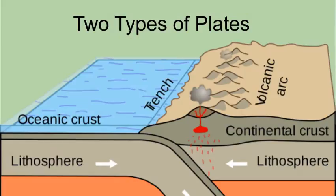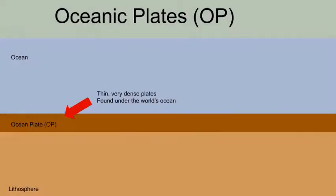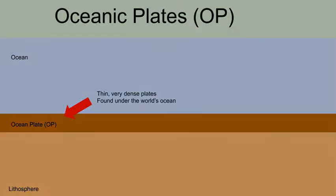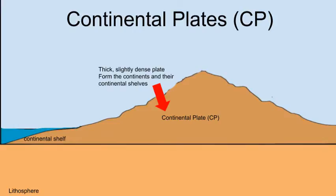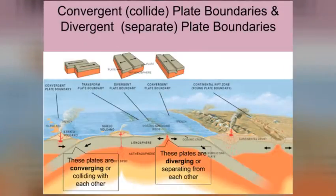Before we get into the why and how, let's review the two types of plates on our planet. First, we have the oceanic plates, which are thin, very dense plates found under the world's oceans. Continental plates are thick, slightly less dense plates that form the continents and their continental shelves. As the plates move across the mantle, they converge or collide with, and diverge or separate from each other. These actions create and shape the world's landforms.